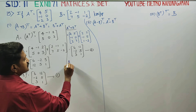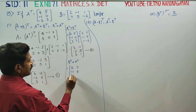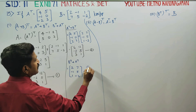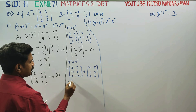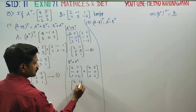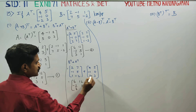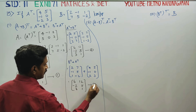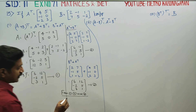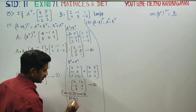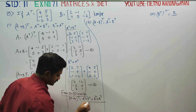B transpose plus A transpose: B transpose is 2, 7, minus 1, 5, 1, minus 2 and A transpose is 4, 5, minus 1, 0, 2, 3. Adding again gives the same result. So A transpose plus B transpose is equal to B transpose plus A transpose. Hence the first result is verified.